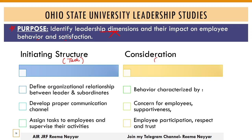The first dimension is Initiating Structure — keep in mind this is related to task-oriented leadership. Here, hierarchy is established between the leader and followers. Proper communication channels are developed so the leader can execute tasks, assign work, and employees can give feedback or grievances. The focus here is on assigning tasks to employees and supervising their activities.